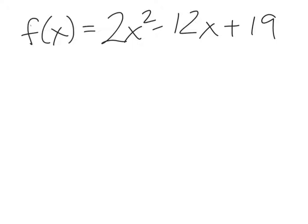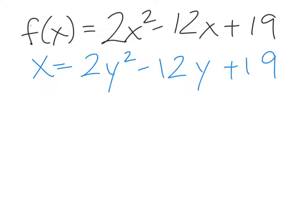So let's see if that makes sense. If I switch them, I say x is equal to 2y squared minus 12y plus 19. I need to get this back to vertex form so I can solve for y. So I'm going to complete the square — I'm going to factor out a 2.